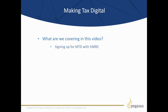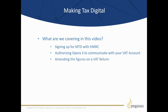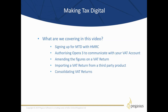Firstly, I'll take you through the process of signing up for Making Tax Digital with HMRC, so you will see the sort of information required. Then we'll look at how you will authorize your copy of Opera 3 to access your VAT account on the HMRC site using the new HMRC API. I'll create a VAT return, and if you need to make final adjustments to the figures, we'll look at how they can be amended. If there are multiple companies within your group with the same VAT registration number, there will need to be only one VAT submission to HMRC. I'll show you how VAT consolidation works within Opera 3 and finally how to submit that VAT return to HMRC.